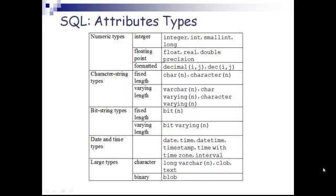SQL attribute types — the data types include: numeric types such as integer, floating point, and formatted; character string types of fixed length and varying length; bit string types of fixed length and varying length; date and time types; and large types, which include character and binary.